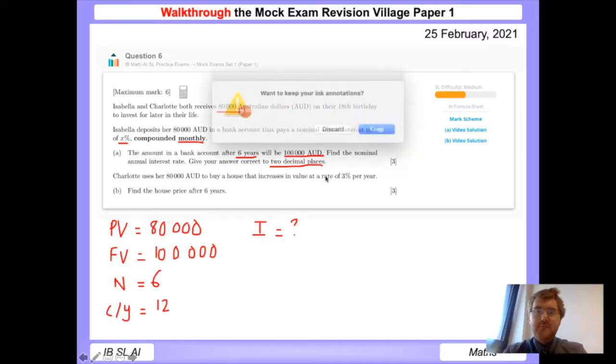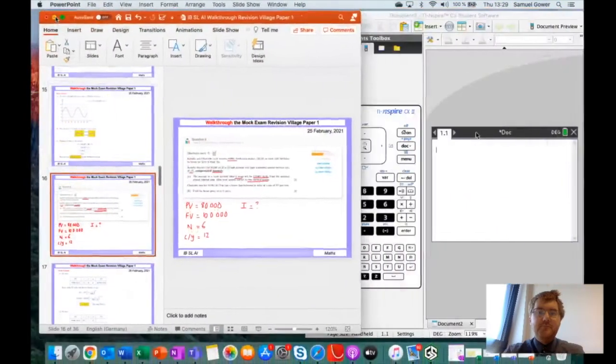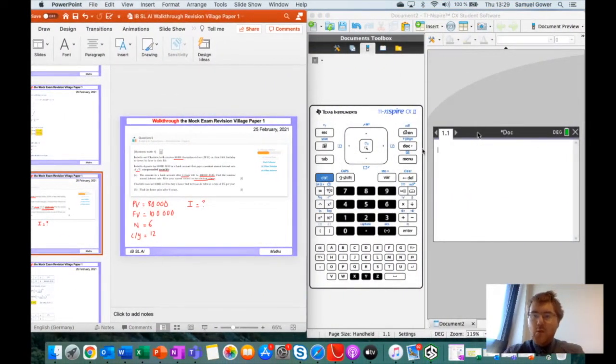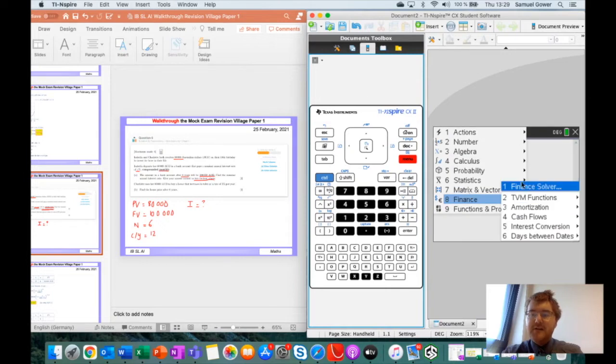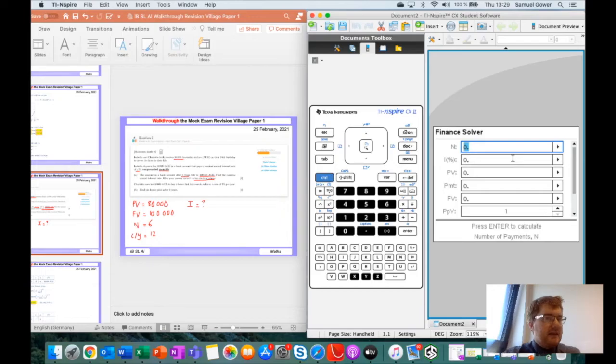We're going to go to the normal calculator view, go to menu, finance, and finance solver. Here we have a list of options. The TI-Nspire tells you what these stand for. N is the number of payments, which is six years. Interest rate we do not know. Present value we need to put as a negative number, so minus 80,000. We leave payment as zero. Final value is 100,000.